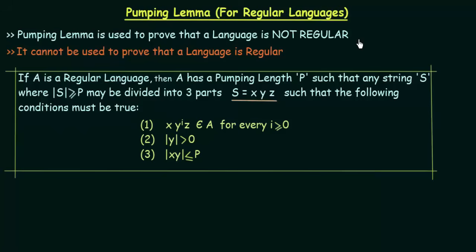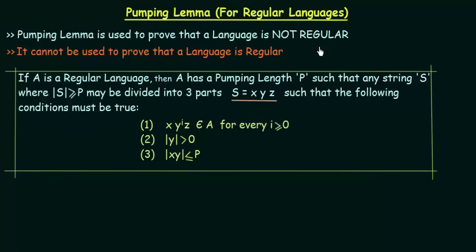How can you prove that a language is not regular? For that we will be using Pumping Lemma. You should keep in mind that Pumping Lemma can be used to prove that a language is not regular, but it cannot be used to prove that a language is regular. It can only be used to prove that a language is not regular.